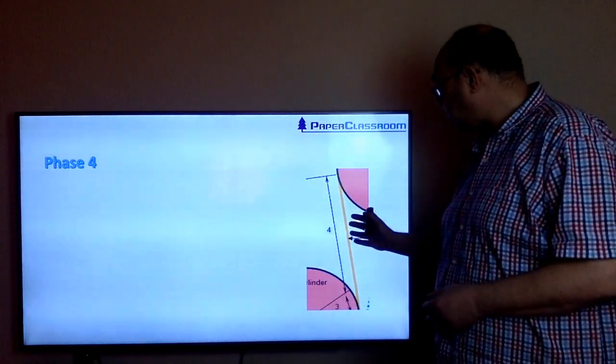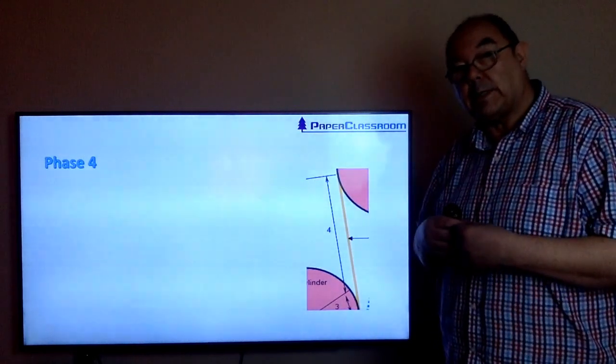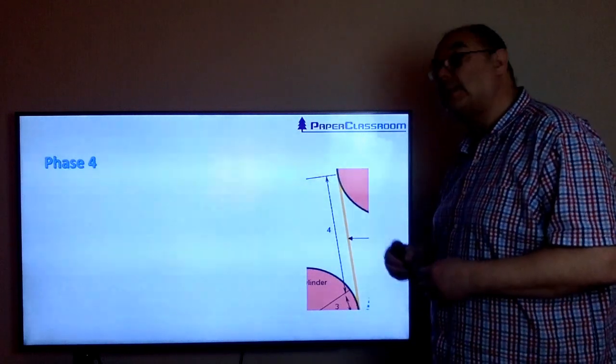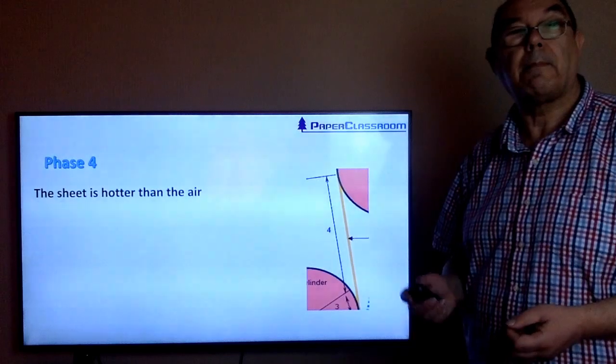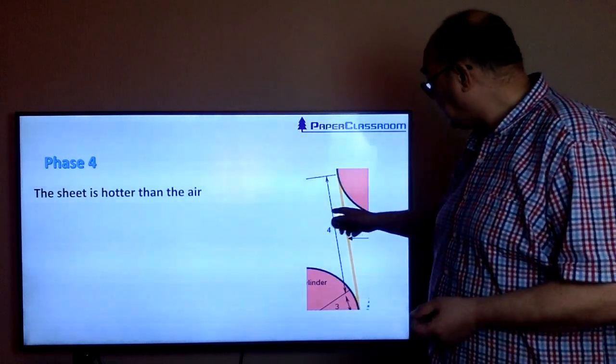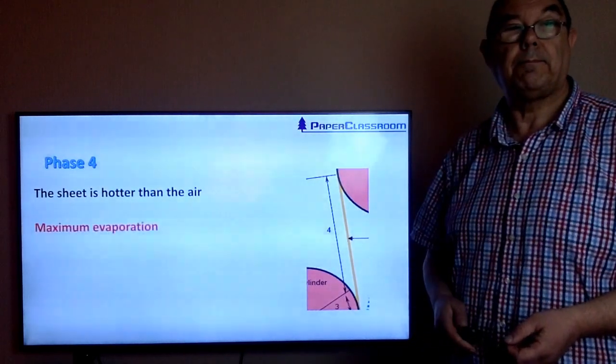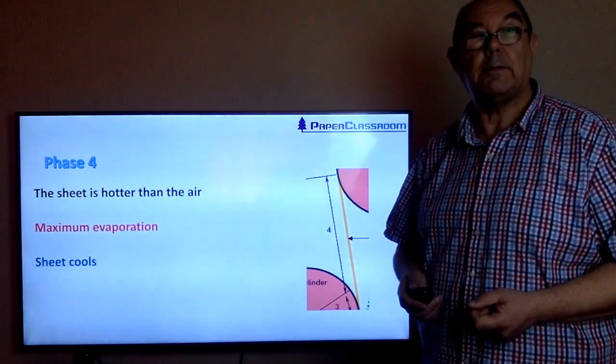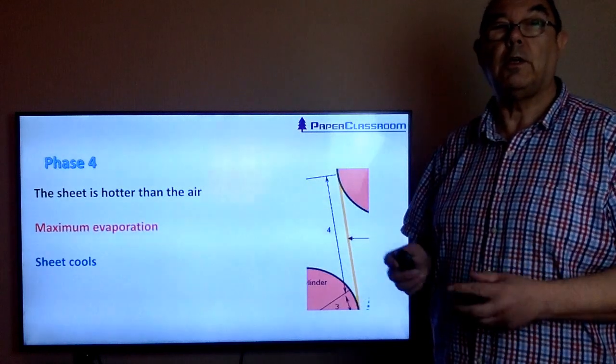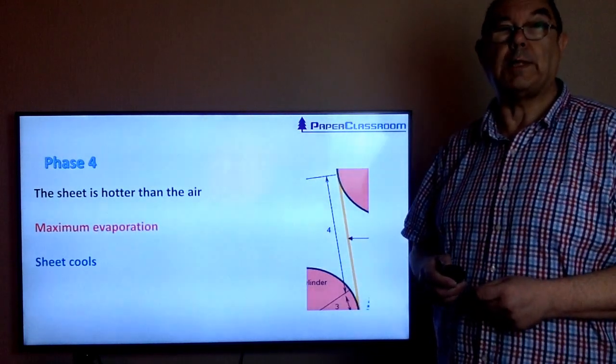When evaporation occurs, because it takes the heat from the sheet, the sheet will substantially cool down. The sheet is hotter than the surrounding air. You've got maximum evaporation at that point, and because of this evaporation, the sheet will cool substantially.